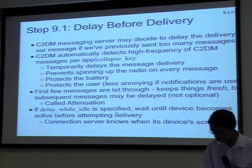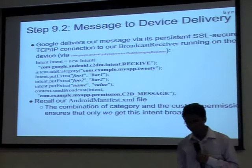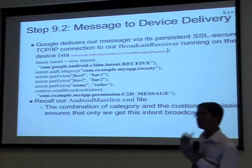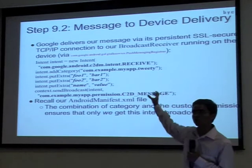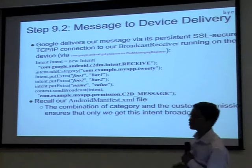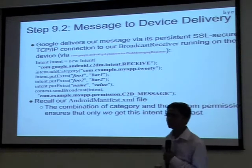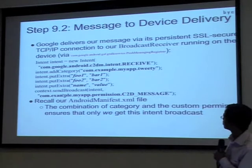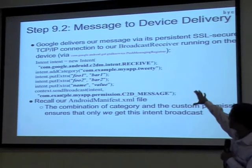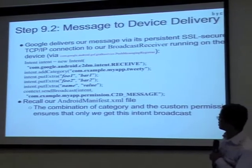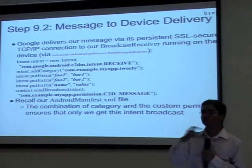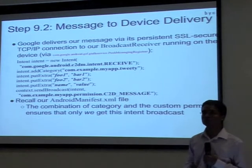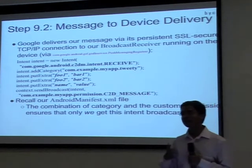The Google messaging server sends the message from cloud to your device using their persistent connection based on the GDoc service. The message is sent as key-value pairs, and based on the intent filter in your Android manifest file, your broadcast receiver's onReceive event is called.